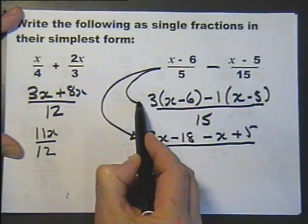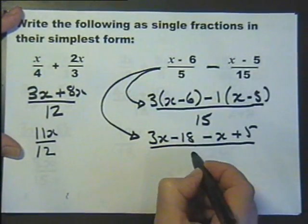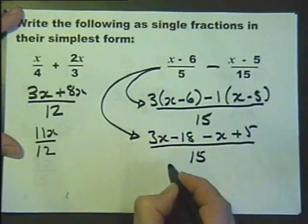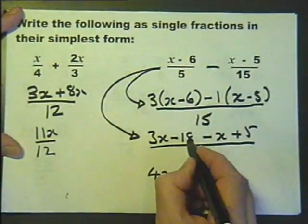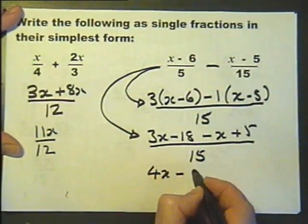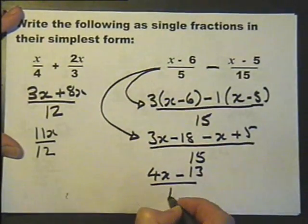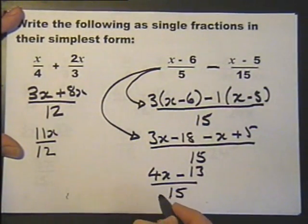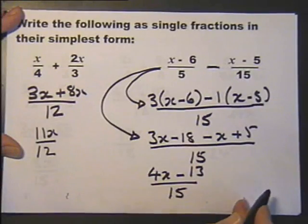Now I do admit you can go straight from that line to that line, but I would rather go via that line. That's 4x, and that will give me minus 13. The top won't factorise, so it won't cancel.